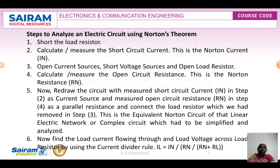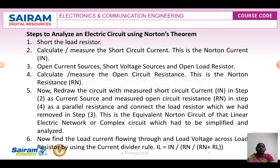The current source should always be in parallel with the resistance. The current source is ISC or IN and the resistance is RTH or RN in parallel with the current source. To find the current through the load resistance IL, we apply the current divider rule. The total current is IN multiplied by the opposite resistance RN divided by the total resistance RN plus RL.